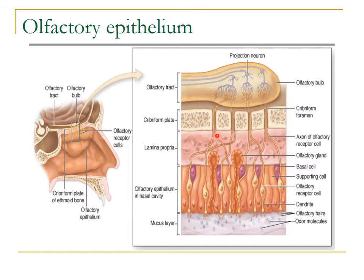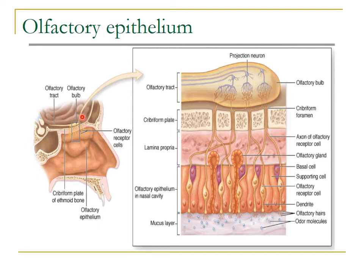The olfactory epithelium lines the olfactory region. On the lateral wall of the nose there are the superior, middle, and inferior conchae. The superior concha and the roof of the nasal cavity are lined by the olfactory epithelium. The cribriform plate of the ethmoid bone forms the roof of the nasal cavity and separates it from the cranial cavity. The sphenoidal air sinus is also visible in this region.